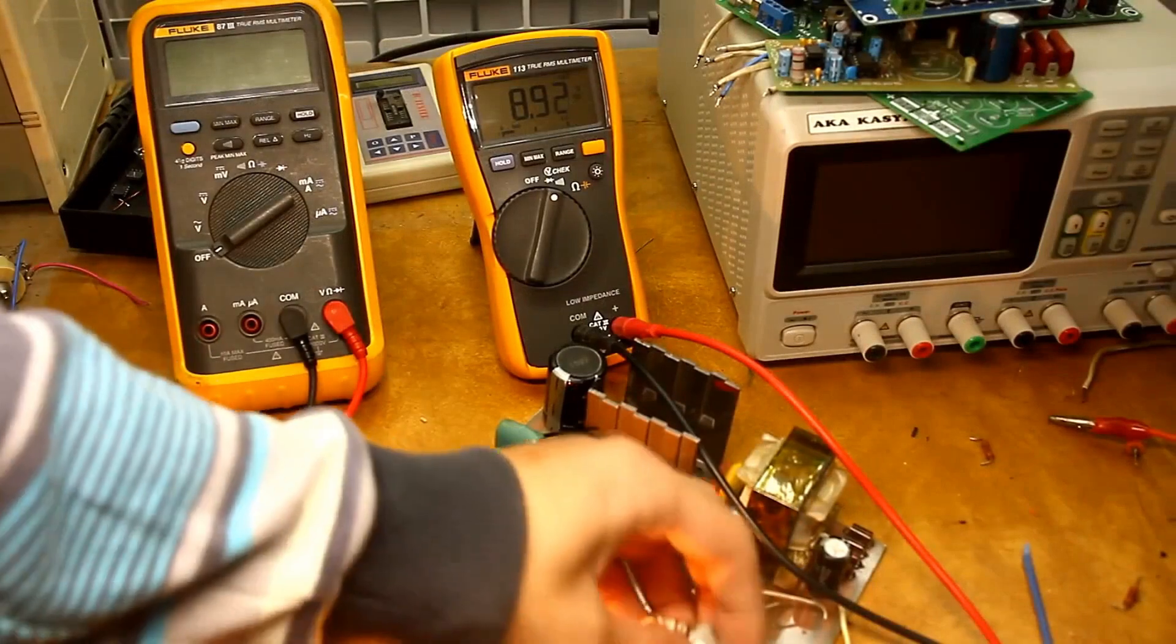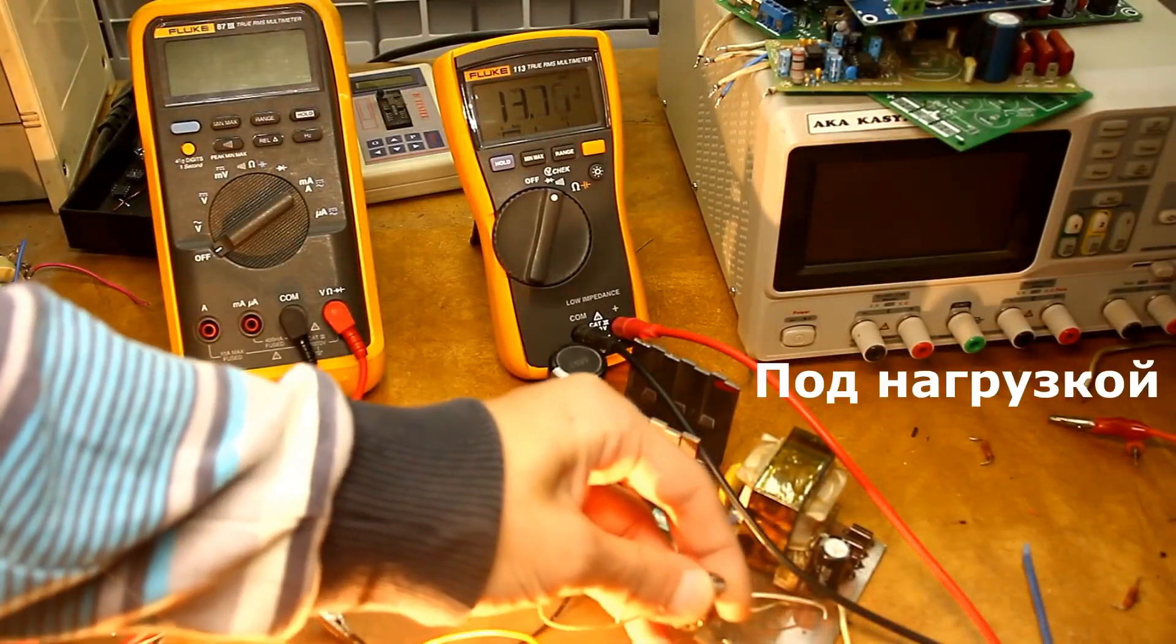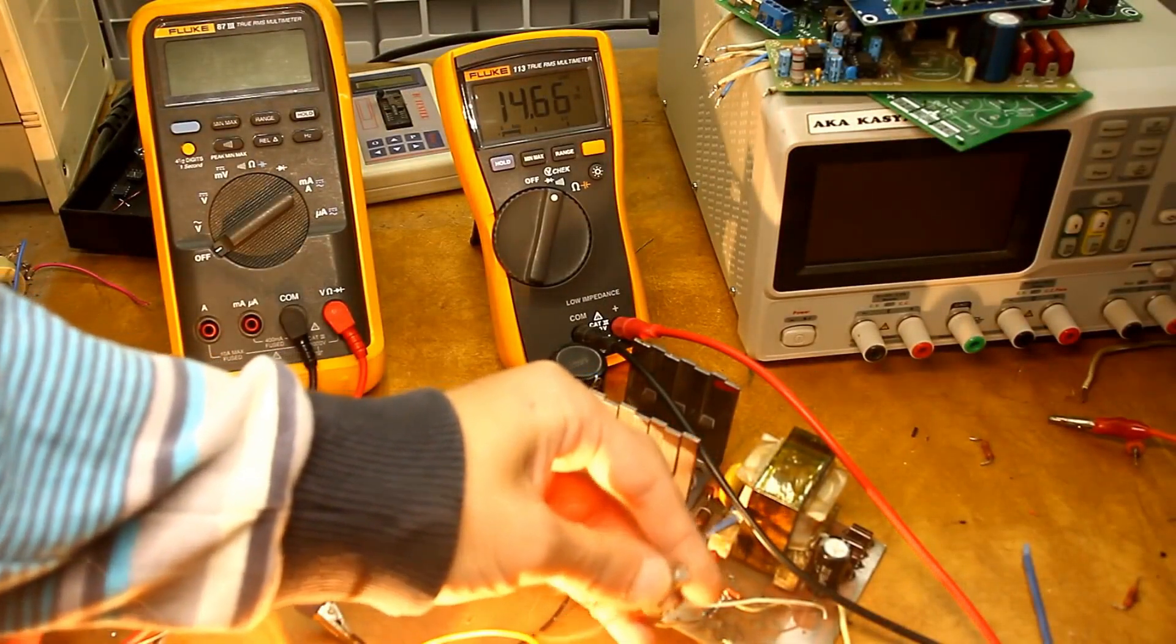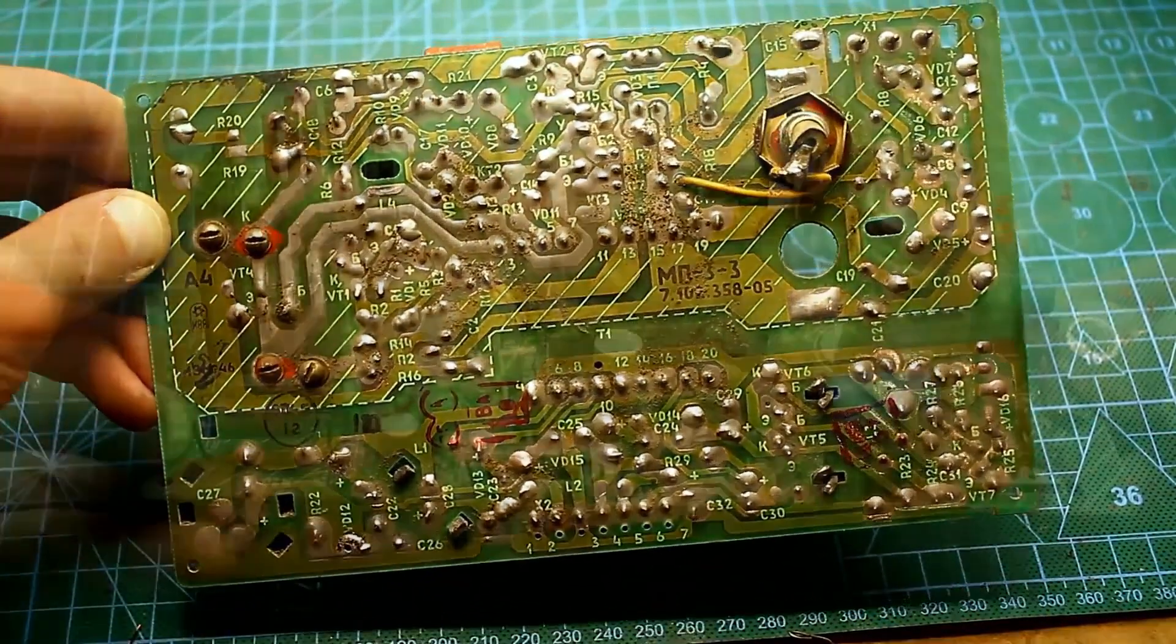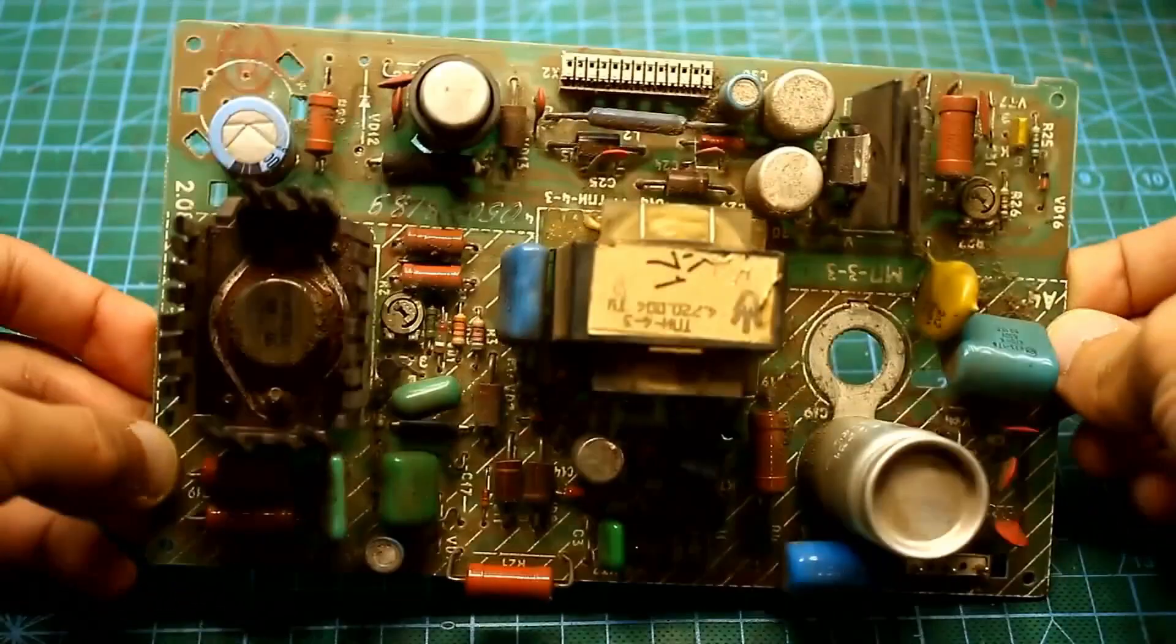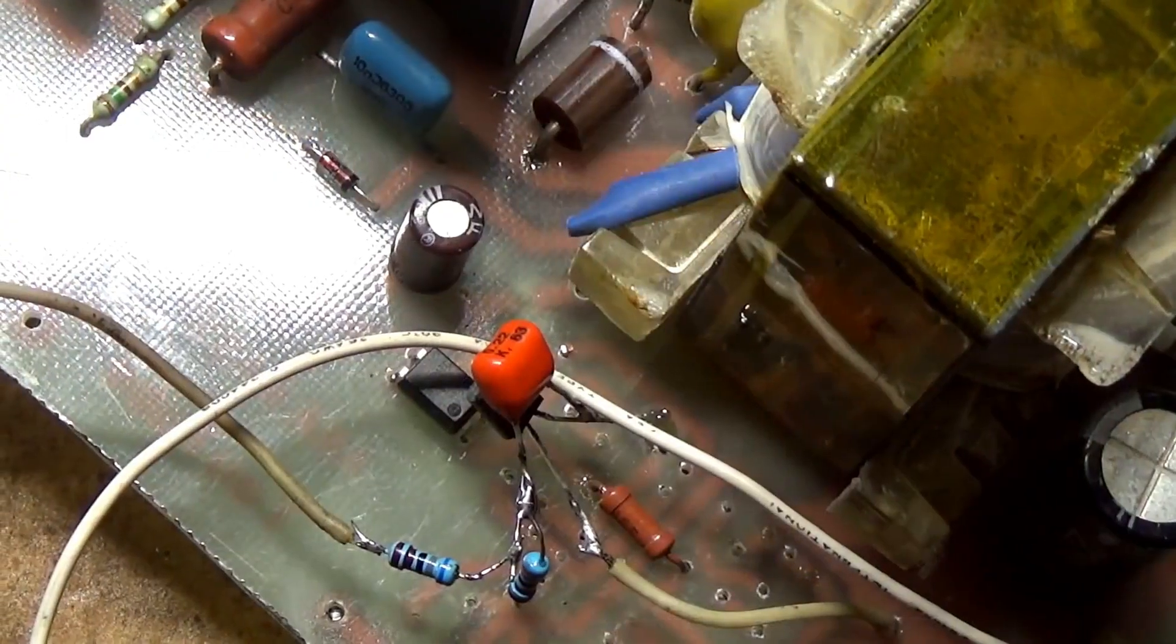During operation, without a load, the power supply might whistle, but not much. This is generally normal. The original MP33 unit also whistles, and overall this phenomenon for similar power supplies, even for low power ones, is not uncommon.